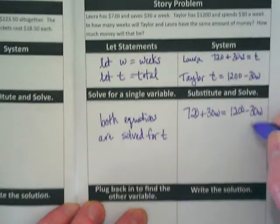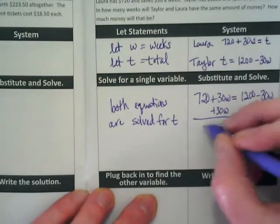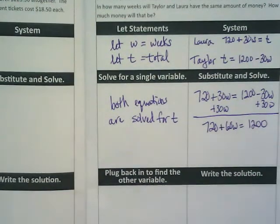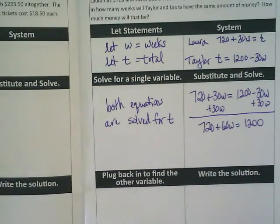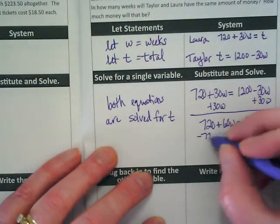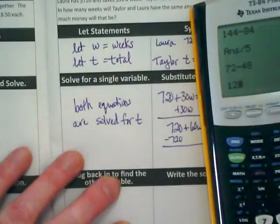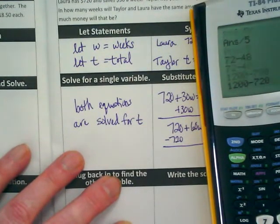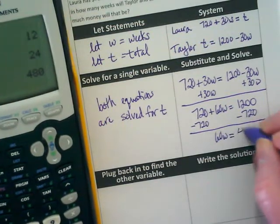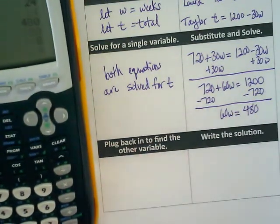We're going to solve for the number of weeks. Let's add $30w to both sides and get $720 plus $60w equals $1,200. Next step is to subtract $720 from both sides. $1,200 minus $720 gives us $480, so $60w equals $480. If we divide both sides by 60, we get 8.